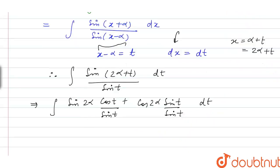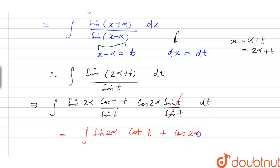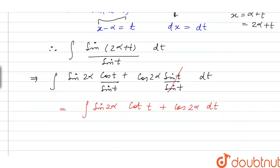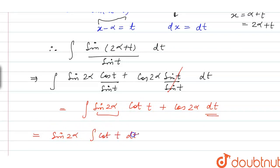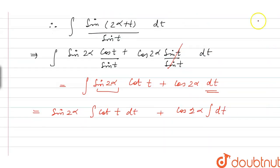The sin(t) in the second term cancels with the denominator. The expression simplifies to the integral of sin(2α)·cot(t) plus cos(2α) dt. Integrating term by term: sin(2α) times the integral of cot(t) dt, plus cos(2α) times the integral of dt.